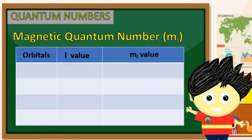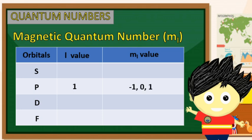Tulad ng ating nabanggit, ang bawat orbitals ay may kani-kaniyang value ng angular momentum number. Halimbawa, kung kukunin natin ang ml ng p-orbital, dahil ito ay may L value na 1, ang value ng ml nito ay magsisimula sa negative 1. Isa ito sa nakatutulong upang malaman natin kung ilan ang orbitals of a type per energy level, at ito rin ang nagde-describe sa isang particular set ng quantum number. Paano naman kung kukunin natin ang ml ng ating s-orbital? Ang L value ng ating s-orbital ay 0, kaya ang ml nito ay 0 pa rin, na nangangahulugang isa lamang ang orbital nito. Ang d-orbital naman ay may L value na 2, kung kaya ito ay magkakaroon ng ml value na negative 2, negative 1, 0, 1, hanggang positive 2.